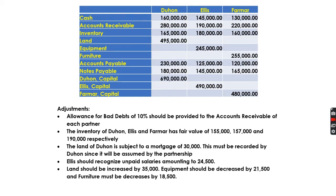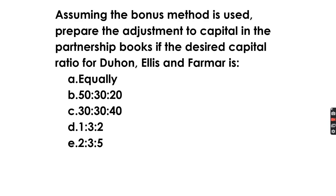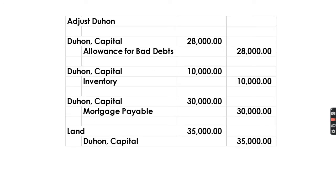After the partnership formation, we will also prepare the bonus method using scenarios A, B, C, D, and E. Let us first prepare the adjusting entries on the books of Duhon.